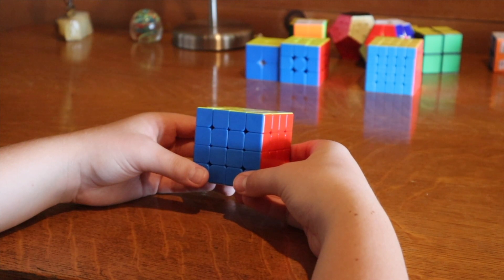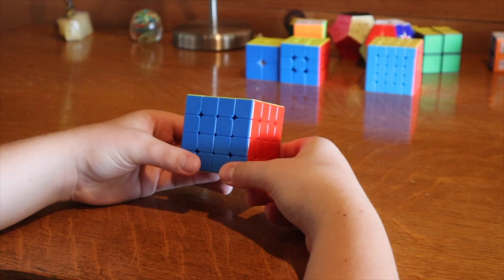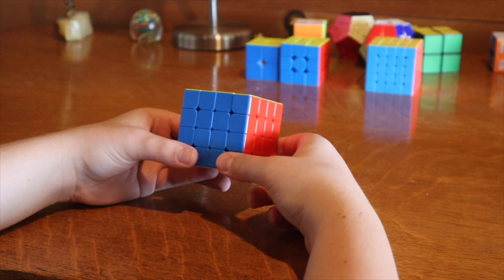For 4x4, we use all of those turns and one more. You could turn just one of the middle layers, like the right middle layer, here.